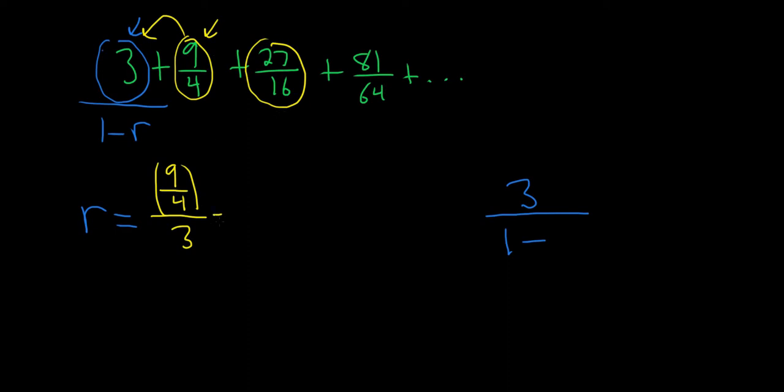All right, 9 over 4 divided by 3 is really 9 over 4 times 1 over 3, because division is multiplication by the reciprocal. 3 goes into 9 three times, and so we end up with 3 over 4.